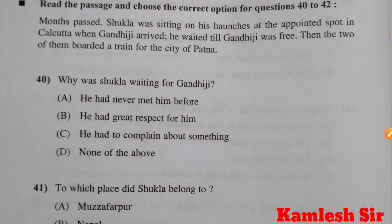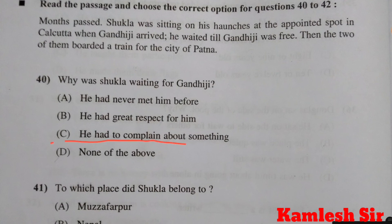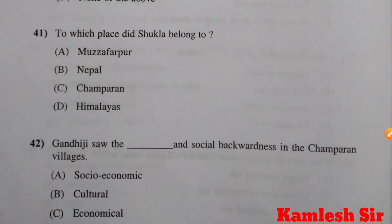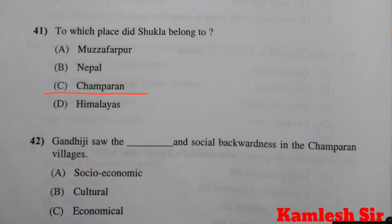Question 40: Read the passage — Months passed. Shukla was sitting on his haunches at the appointed spot in Kolkata when Gandhiji arrived. He waited till Gandhiji was free, then the two of them boarded a train for the city of Patna. Why was Shukla waiting for Gandhiji? Answer C: He had to complain about something. Question 41: To which place did Shukla belong? Answer C: Champaran. Question 42: Gandhiji saw the dash and social backwardness in the Champaran villages. Answer B: cultural.